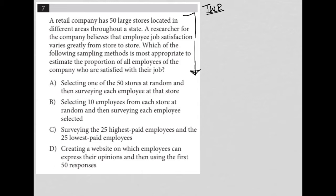The first sentence here says: a retail company has 50 large stores located in different areas throughout a state. So 50 large stores — that's the quantitative info. A researcher for the company believes that employee job satisfaction varies greatly from store to store. The next sentence asks: which of the following sampling methods is most appropriate to estimate the proportion of all employees of the company who are satisfied with their job? The company has 50 stores and we want to figure out the proportion of employees that are satisfied with their job.